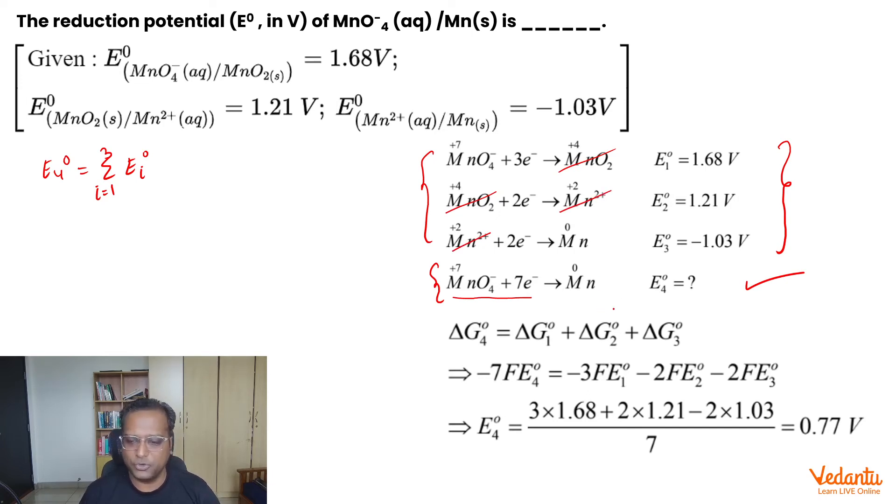So, delta G4° will simply be equal to sum of delta G1°, delta G2°, and delta G3°.